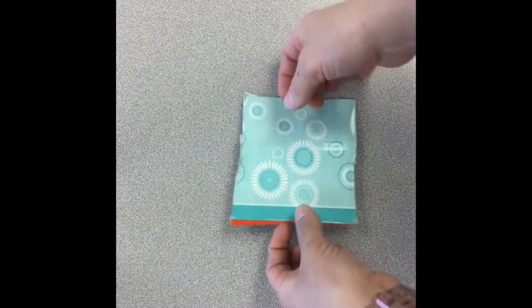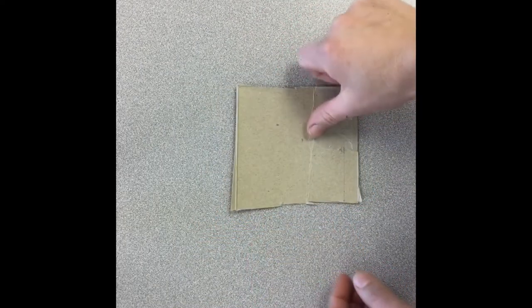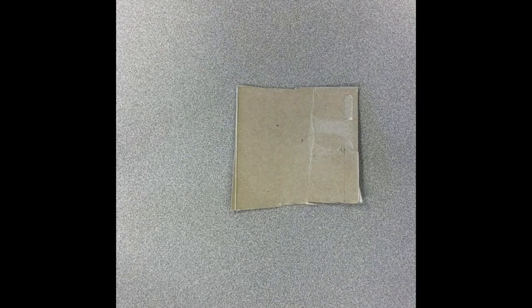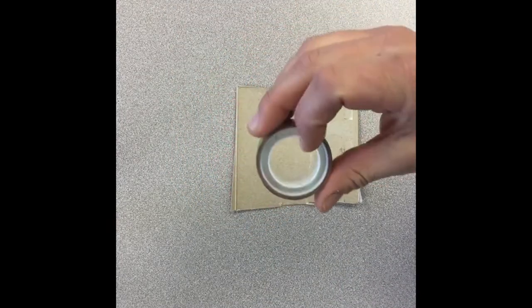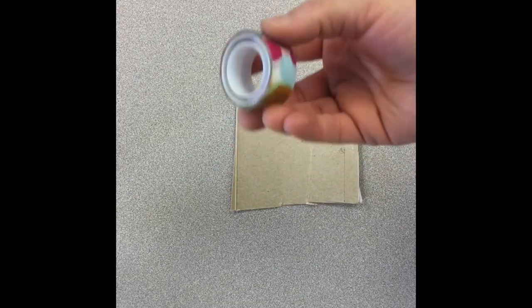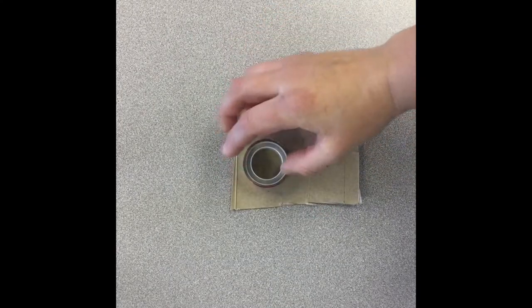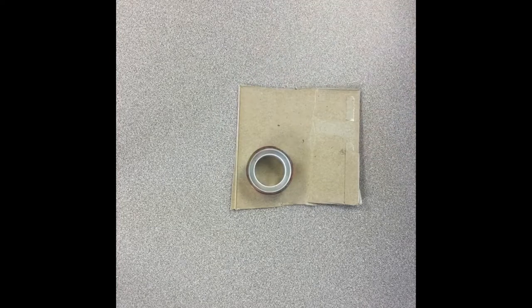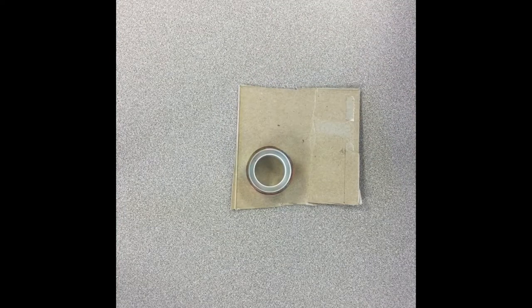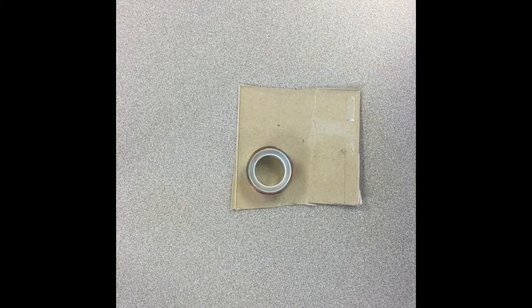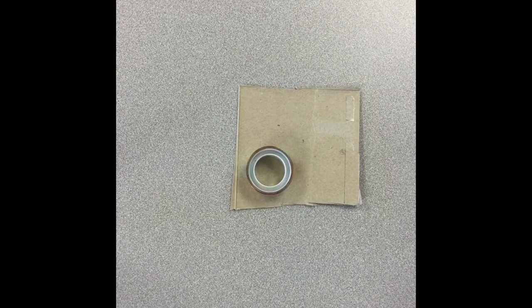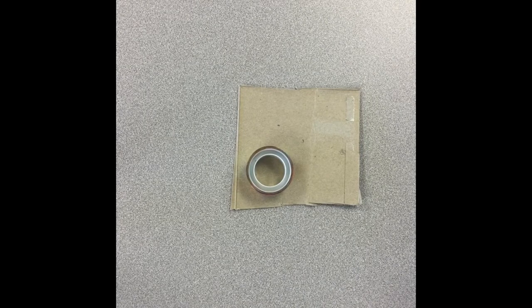The best thing is just to start by finding something you can trace that's already in the shape of a nice circle. So I'm going to use this roll of tape and I'm just going to lay it down and trace a circle around that with a pen or a pencil.